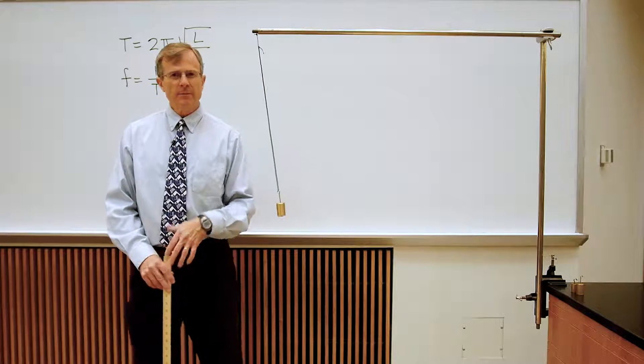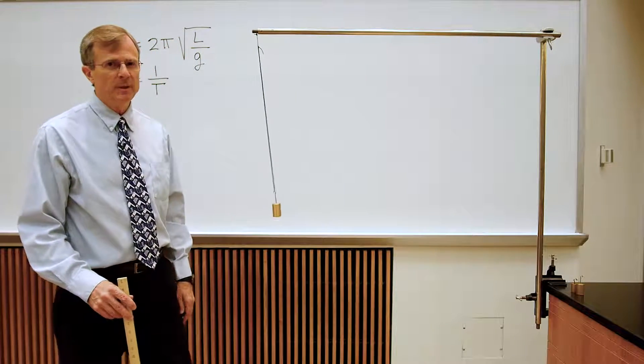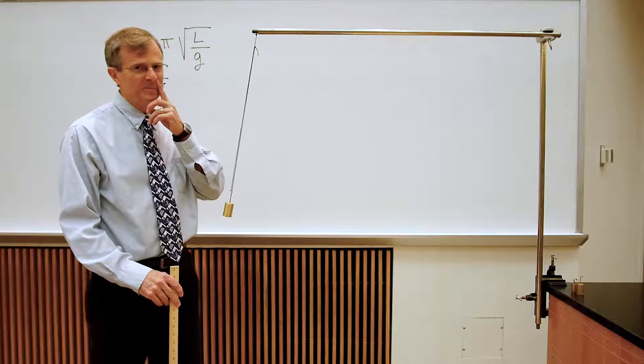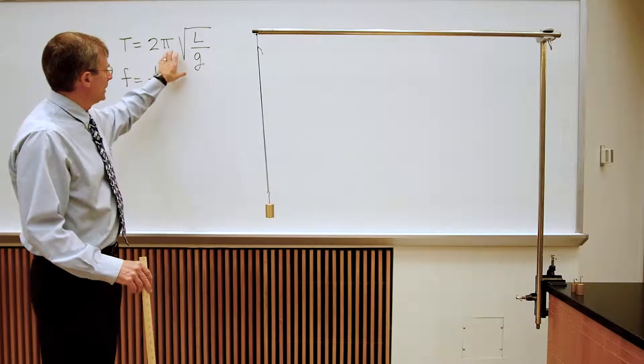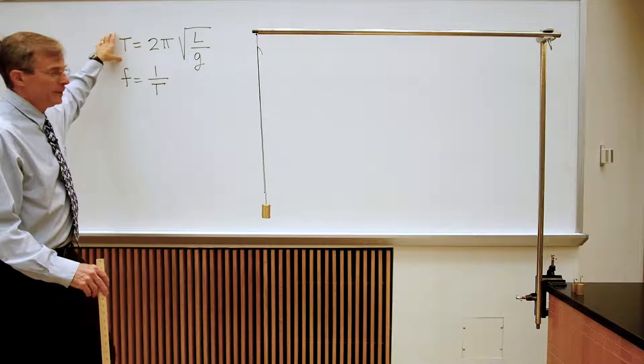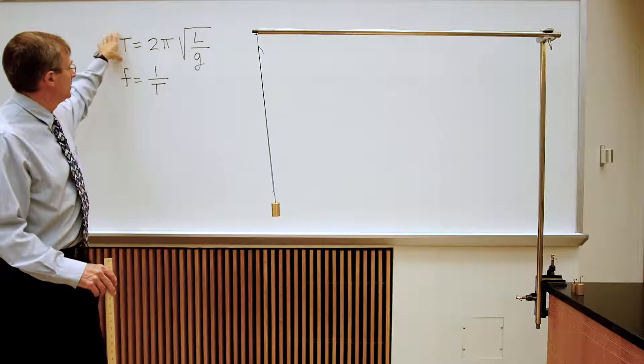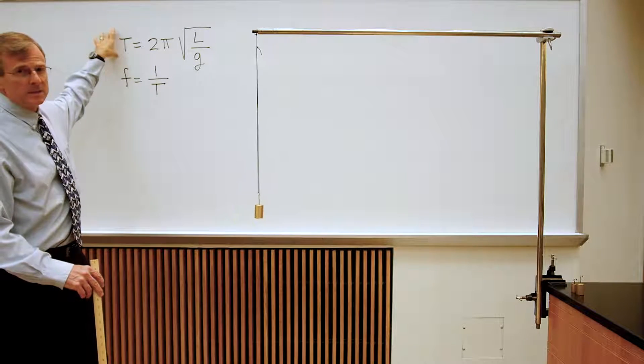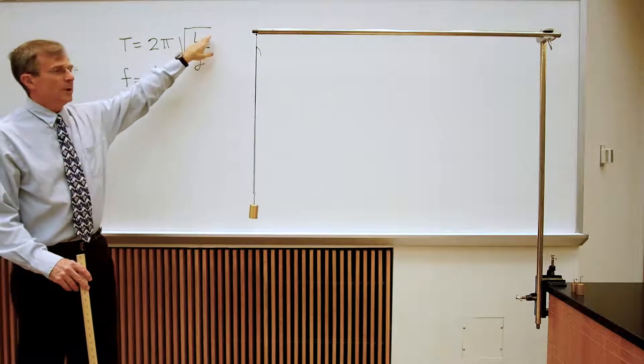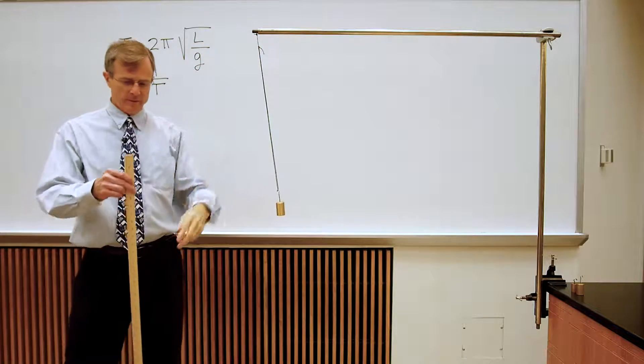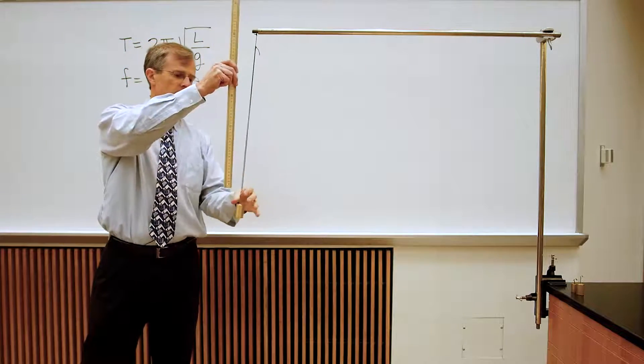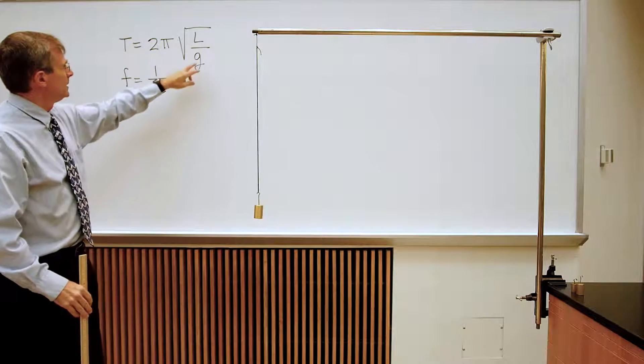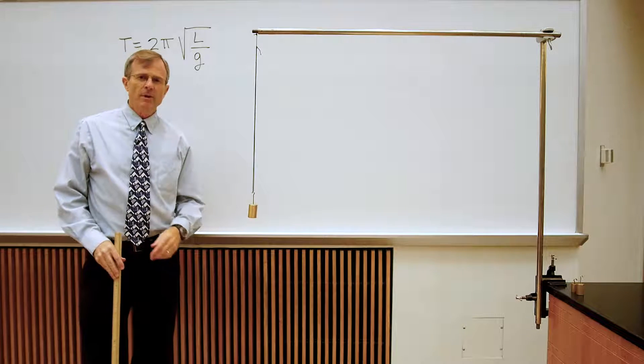So we want to think about today how that period depends on the various parameters of the problem. We'll work out in class, or have already worked out in class, the dependence of the period. The period is denoted by the capital letter T, and it goes like 2 pi the square root of L, which is the length of the pendulum, this length from the center of mass up to the point where it's attached, divided by G, the acceleration of gravity.